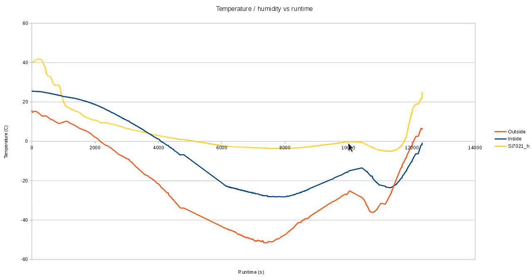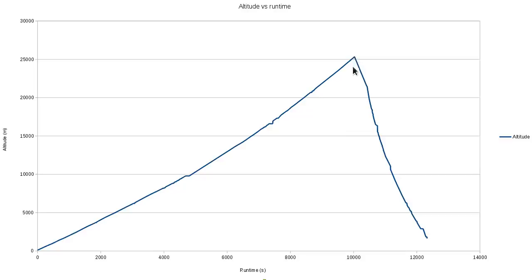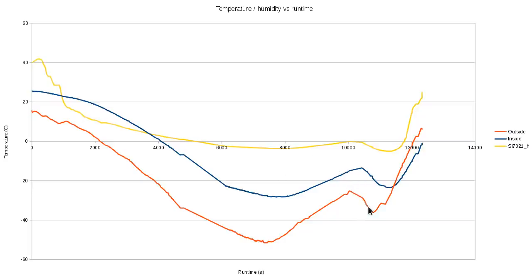Then it warmed up again until about the 10,000-second mark, which is where the balloon burst. Just on 10,000 seconds — that's a nice round number. As it fell down again it went through that cold patch, but because it was moving faster on the way down it didn't really have enough time to cool to that lower temperature. As it got back to ground level it didn't quite get up to zero degrees on the inside, so the insulation was working in reverse — keeping it cool. The humidity sensor went to negative values; I think the SI7021 sensors are just not meant for that low humidity range.